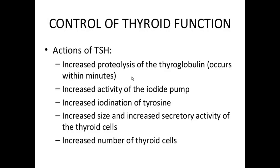Regarding the functions of TSH on the thyroid gland: it increases proteolysis of thyroglobulin (breakdown of the thyroglobulin protein chain), occurring within minutes. It increases the activity of the iodide pump, responsible for trapping iodides into the cells. It increases iodination of tyrosine, increases the size and secretory activity of thyroid cells, and increases the number of thyroid cells. All these functions make the thyroid gland more efficient at producing thyroxine.